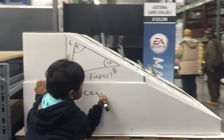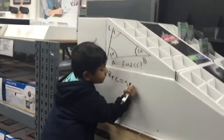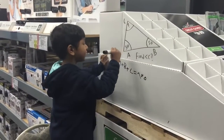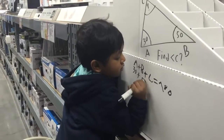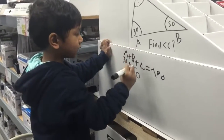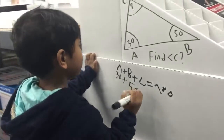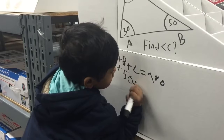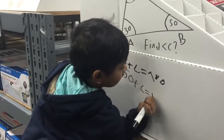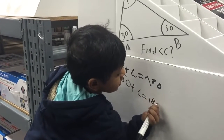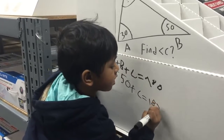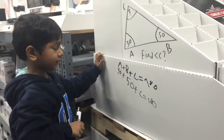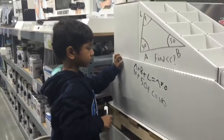It's 180. So let's see: A is 30 and B is 50, but we don't know C, so it must be 180. So 30 plus 50 is 80, and 80 plus C is 180.